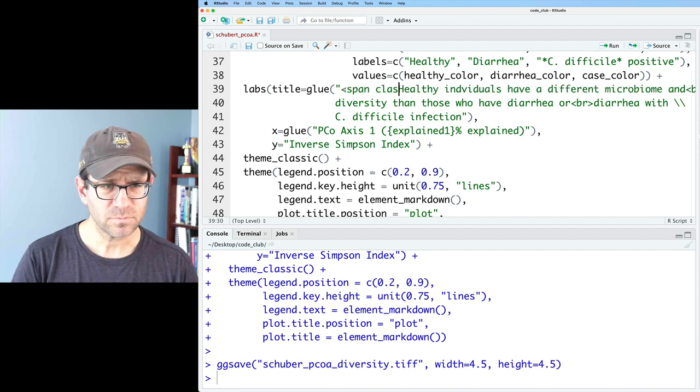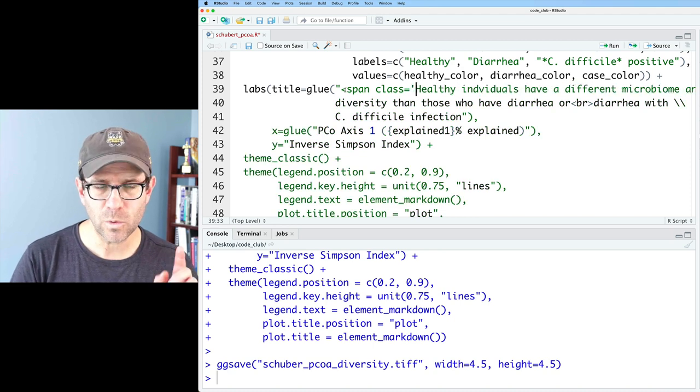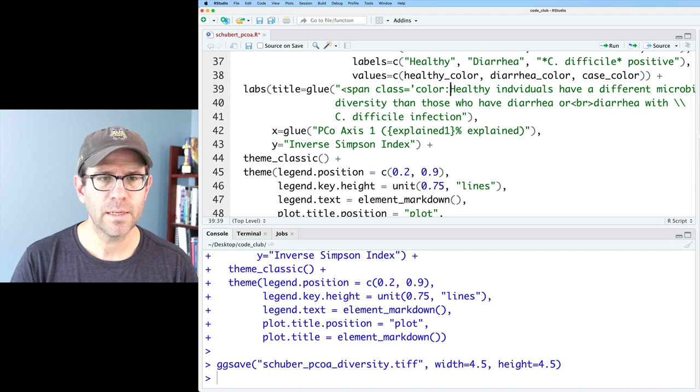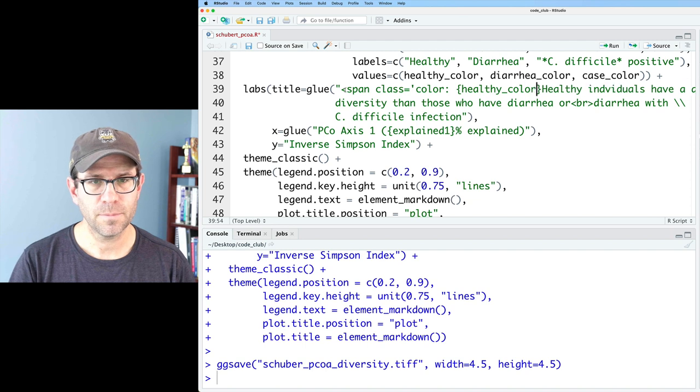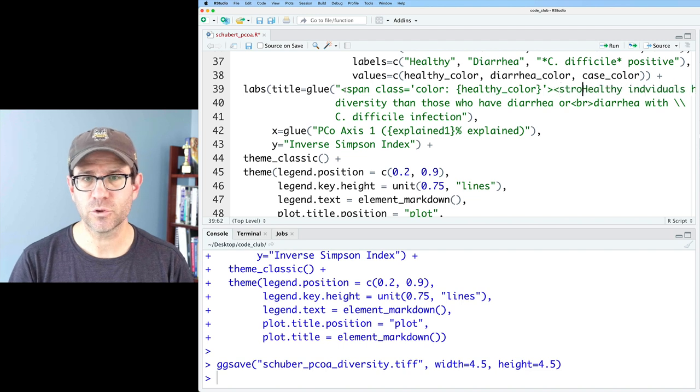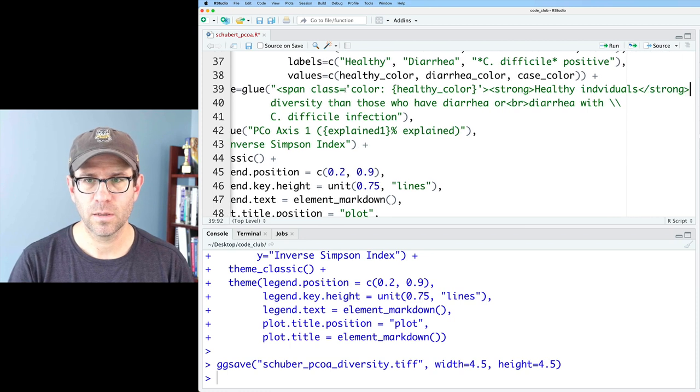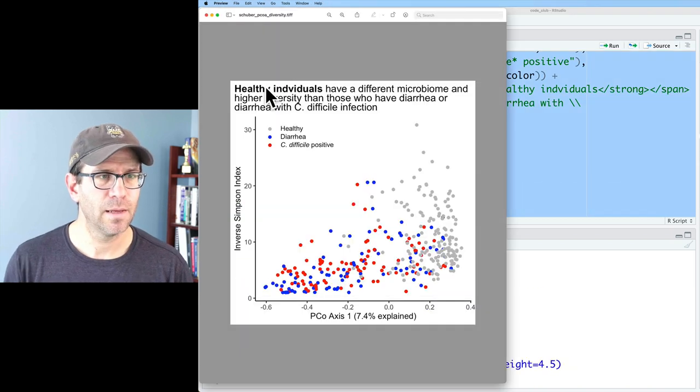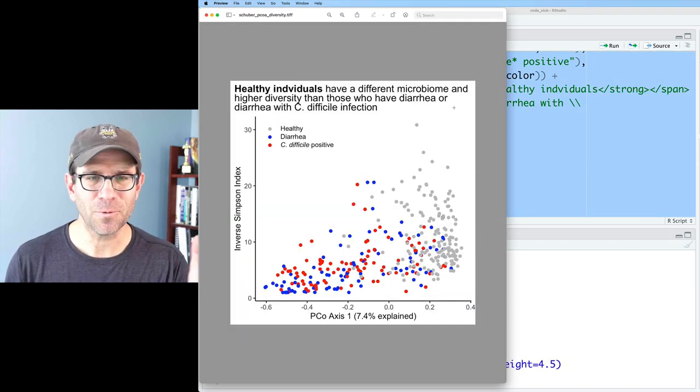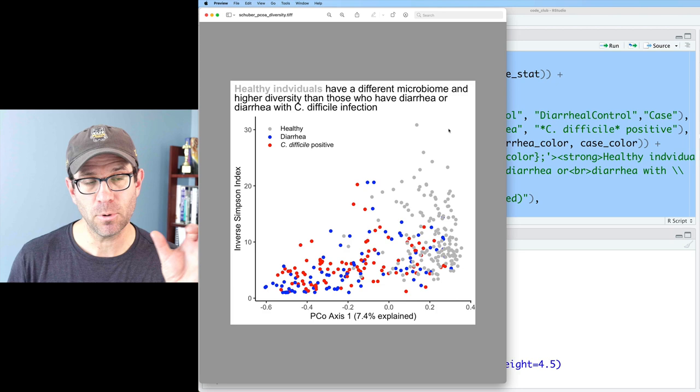So we can do healthy individuals and we will do a span style equals and we'll do a single quote and I'll do color colon. And then the curly braces, we'll do healthy color that. And then close the span and we'll do strong to make it bold. And then we will do back on the strong, back on the span and let's make sure this all works. And bam, healthy individuals is bold black, but not bold gray. This shouldn't be class. This should be style. There we go. So we've got our gray, bolded, healthy individuals,